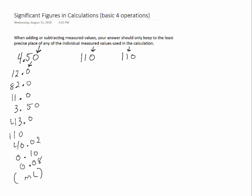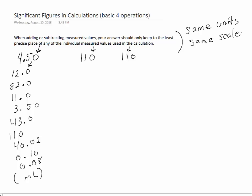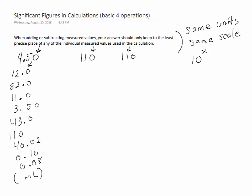When we do addition or subtraction, the important thing is that we only keep to the least precise place out of all our measured values. With all these values it's not a big deal since they're already in the same units, but we need to make sure that whenever we're adding or subtracting, values are in the same units and the same scale. If you have a value in scientific notation and another that is not, you need to put both into scientific notation with the same exponent, or both into regular form. Line up the decimals when adding or subtracting so you can see where the precision is for each value.